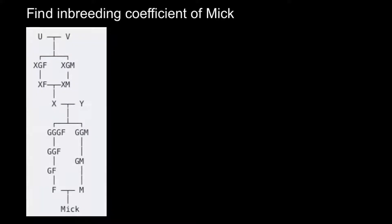Hello and welcome to Nikolai's genetics lessons. Today's problem is to find the inbreeding coefficient of MIG. We have to find how inbred this person is, and as you can see we have two loops here, so two consanguineous matings.